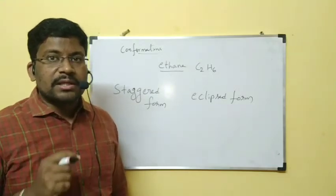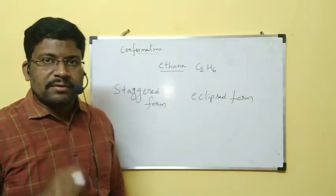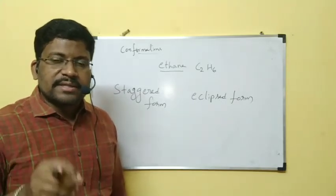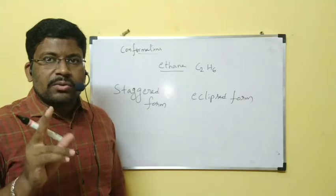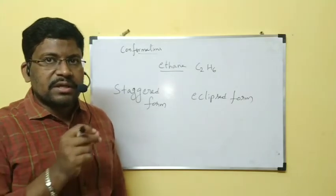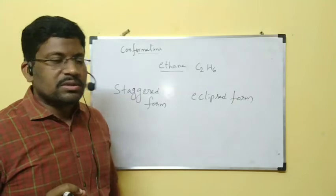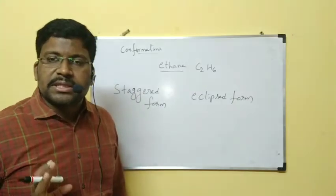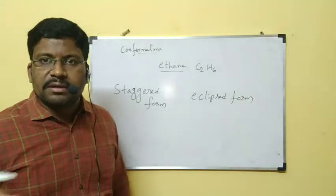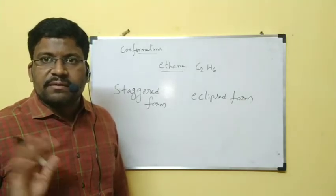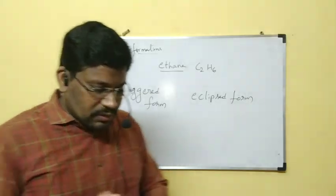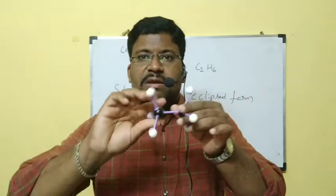We have to see these two forms, along with small associated terms. Two scientists gave the representations of these eclipsed form and staggered form. Those two representations we will see. Now, one more time as a conclusion: because of the rotation of the bond, different forms of ethane we are able to get.